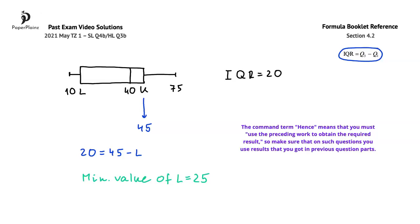There is also another similar command term that you might come across on questions, and this is hence or otherwise. An important difference here is that when the command term is only hence, you must use an answer from a previous question part in order to earn full marks. On questions that start with hence or otherwise, the word hence suggests that you may use a result from preceding work, however, the word otherwise allows for other solutions or methods.